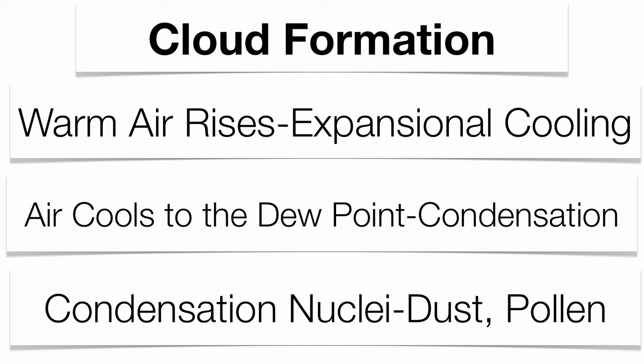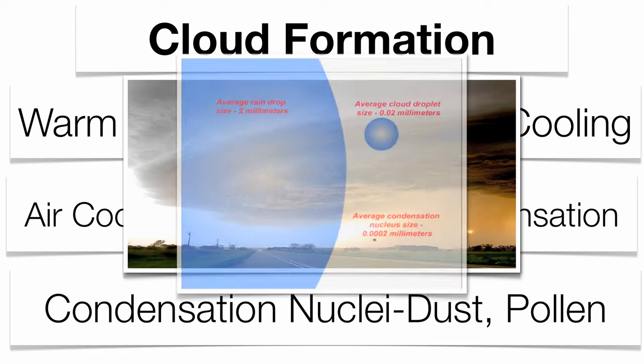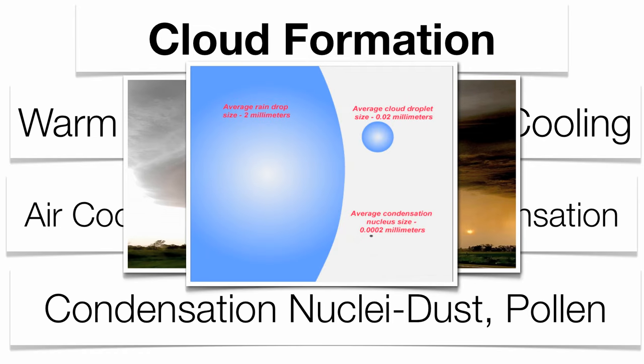Clouds don't just form in thin air — they have to form on a surface. Dust, pollen, pollution, whatever little objects you have in the atmosphere, water droplets can condense onto. Those are what we call condensation nuclei. Clouds are made up of billions upon billions of water droplets with condensation nuclei at the very center. They are literally microscopic pieces in the atmosphere.